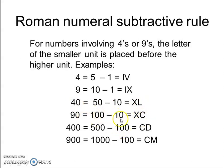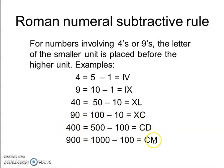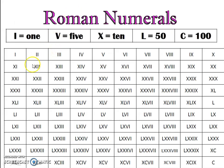For 90, that is 100 minus 10: write C on the right and X on the left, so XC represents 90. Now C can only be subtracted from D and M. So CD represents 400, which is 500 minus 100. You can now pause the video and review all Roman numerals up to 100.